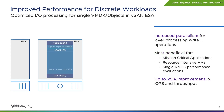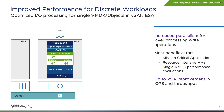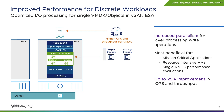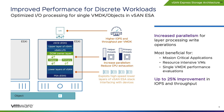With vSAN express storage architecture unlocking the capabilities of ultra-fast modern hardware, VMware looked at more opportunities in the vSAN stack to deliver better performance. As a result, in vSAN 8 Update 1, we've optimized the I/O processing that occurs for each object residing on a vSAN ESA data store, increasing the performance per VMDK by up to 25%. Resource-intensive applications such as mission-critical VMs and VMs with large amounts of allocated virtual hardware resources may see substantial improvement in IOPs and throughput.